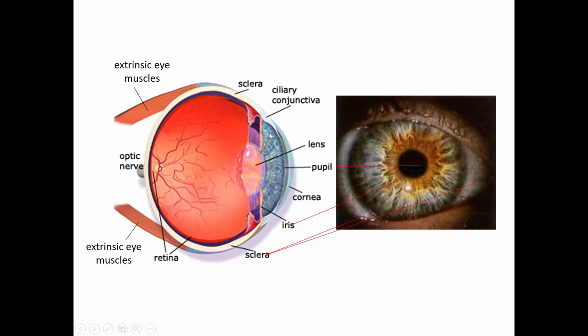The white part of the eye, called the sclera, is this part visible from the side and around the edge when looking directly at the eye. Its job is mainly supportive — it supports and protects the eyeball.